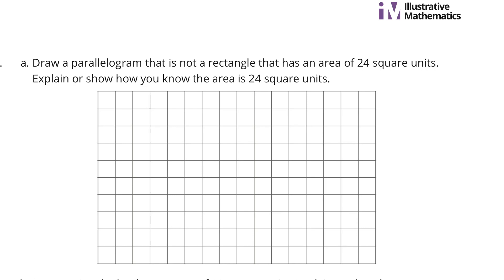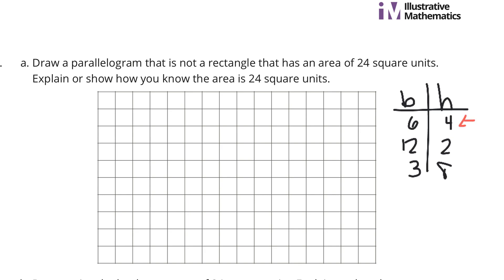Draw a parallelogram that is not a rectangle that has an area of 24 square units. Explain or show how you know that the area is 24 square units. The area of a parallelogram is equal to base times height. So 6 times 4 gets me to 24. I could do 12 and 2, or 3 and 8, but let's focus on 6 and 4. If I draw a base of 6, and since it can't be a rectangle, my height cannot be straight up. I draw it slanted — 4 up and 6 out — for the other base, then connect the segments to have a parallelogram.